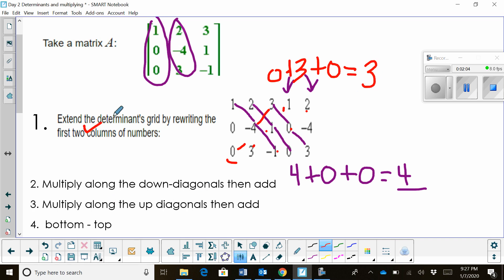So I've extended the grid, I've multiplied the ups and added, multiplied the downs and added, multiplied the ups and added. Now what I'm going to do is take these sums and subtract them. So I take the bottom, which is 4, and I'm going to subtract the top, which is 3. And so my determinant is that difference, which is 1.